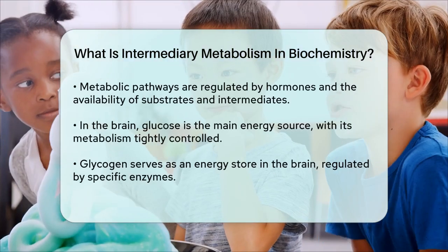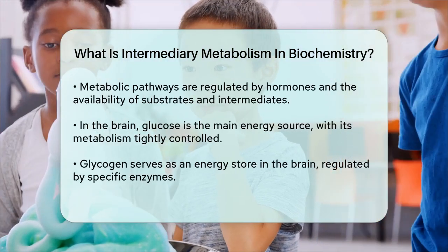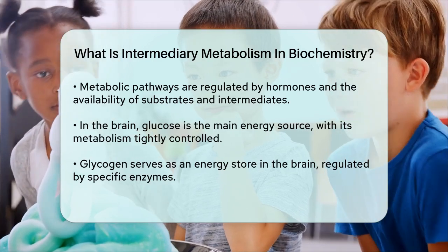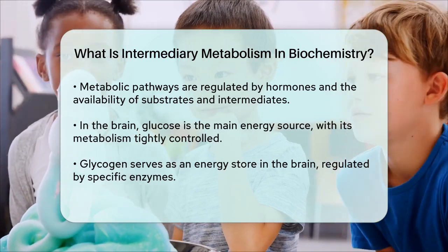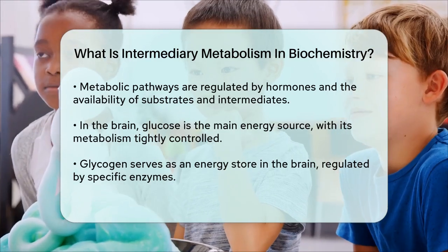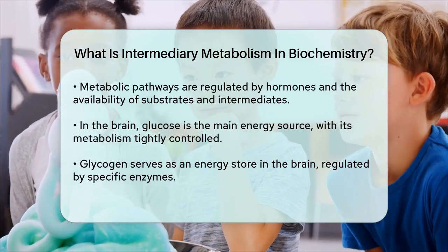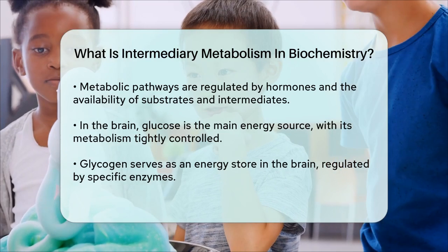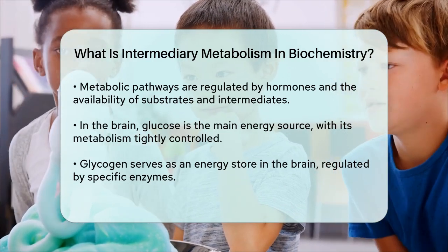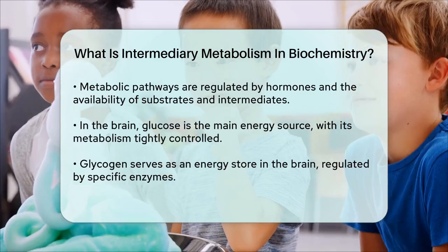In the brain, intermediary metabolism is particularly specialized due to the high energy demands. Here, glucose is the primary source of energy, and its metabolism is tightly regulated to ensure a constant supply of ATP. The brain also uses glycogen as a dynamic energy store, and its synthesis and degradation are controlled by enzymes like glycogen synthetase.